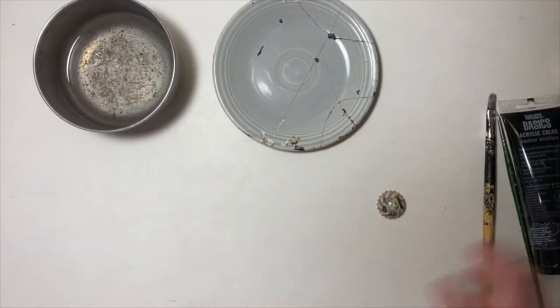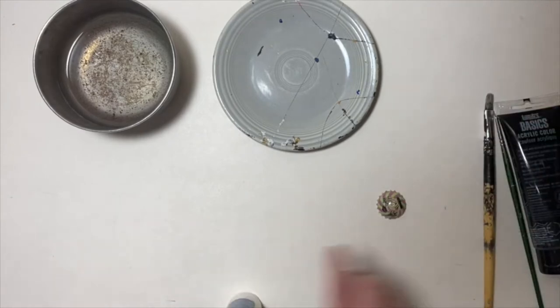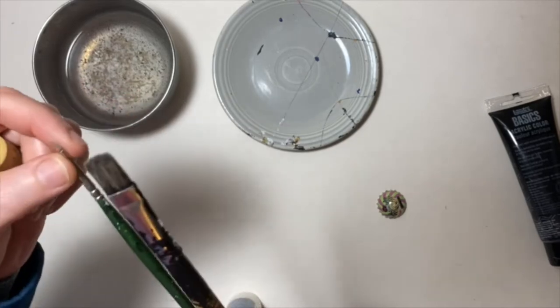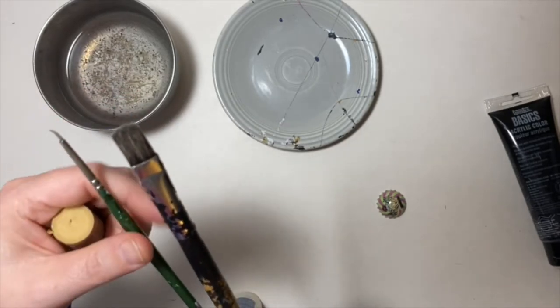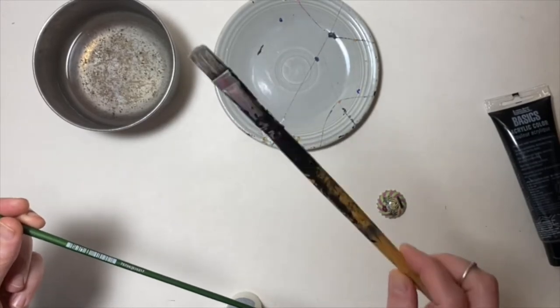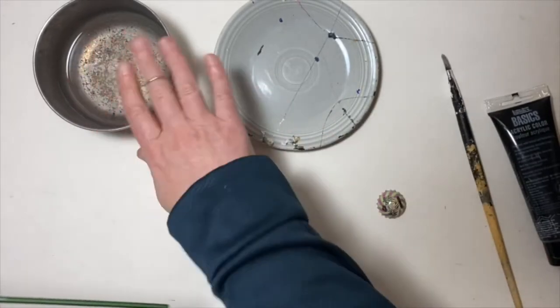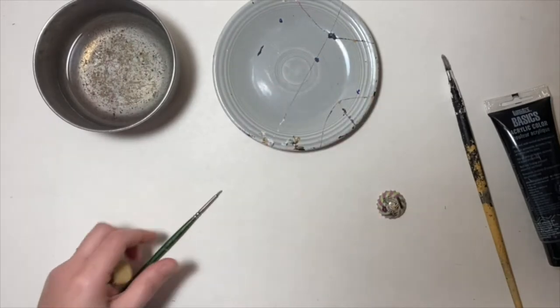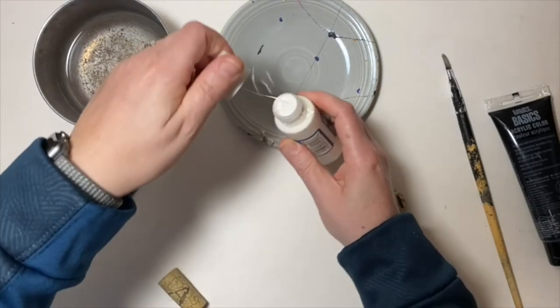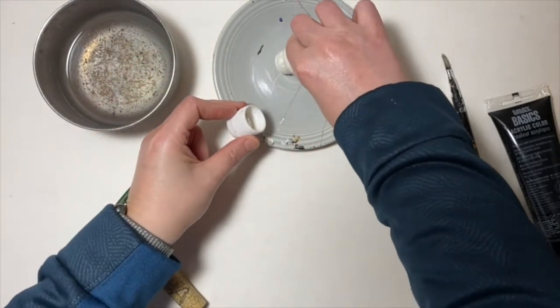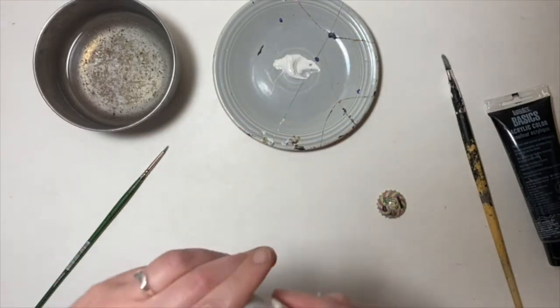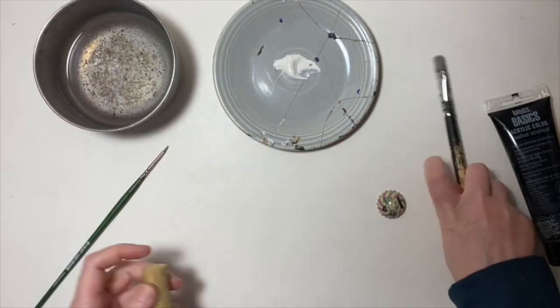Alright, so for this step I pulled out two different paintbrushes, one bigger, one smaller. For this step you might want to use a medium-sized one since it's just priming. Got my water, got my plate. I'm using just regular white acrylic for this step, so if you have primer then use that because that's going to cover a lot better.